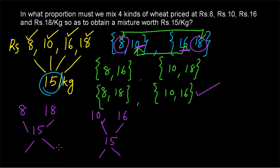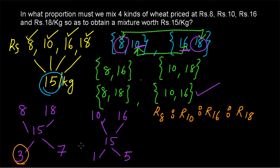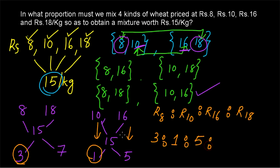Applying allegation: the difference between 15 and 8 is 7; the difference between 15 and 18 is 3; the difference between 10 and 15 is 5; and the difference between 16 and 15 is 1. So the ratio of Rs 8 : Rs 10 : Rs 16 : Rs 18 is 3 : 1 : 5 : 7. That is our required ratio.